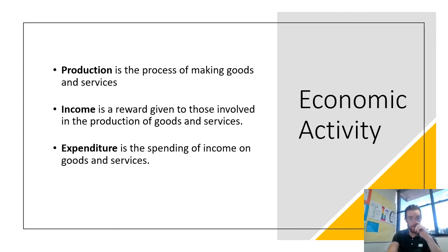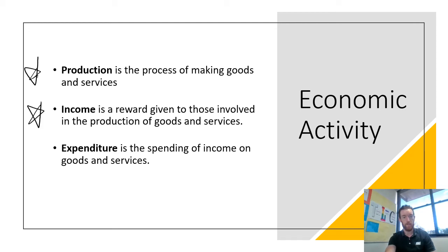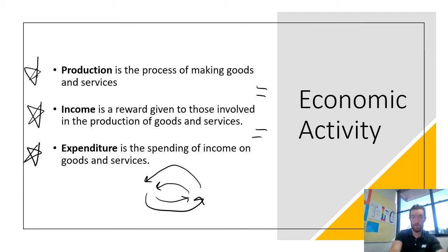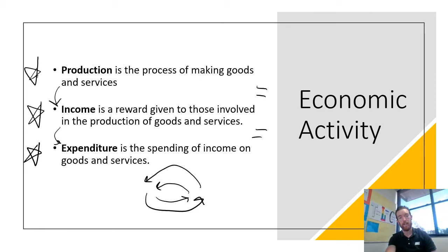There are three main parts to this model: production, income, and expenditure. Production is the process of making goods and services. Income is the reward given to those involved in production. Expenditure is the spending of income on goods and services. Over time, these three things are all going to be equal because they flow into each other: to produce, businesses need resources and must pay income for them; that income becomes expenditure; and that expenditure tells businesses how much to produce — looping on endlessly.